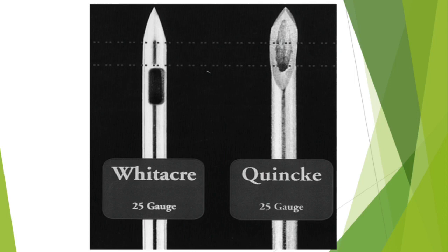The Quincke needle — the prototype for sharp tip needles — has a sharp, medium-length beveled hollow needle. The needle causes more CSF loss, increasing the chance of PDPH. However, since the needle is cheap, it is still used in many parts of the world.